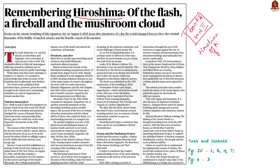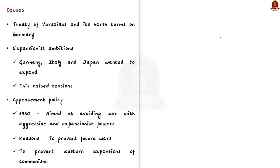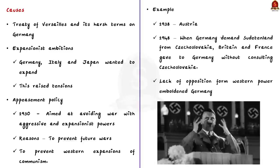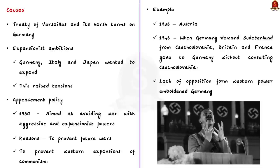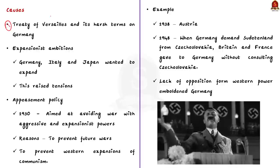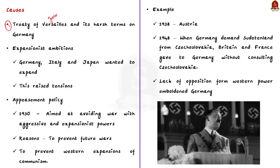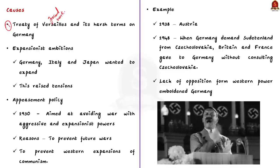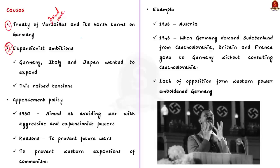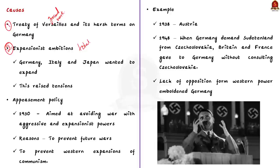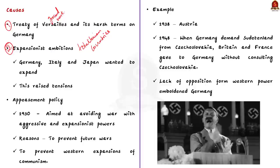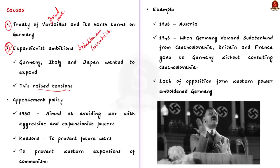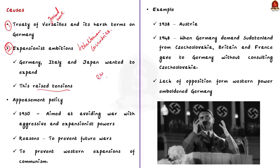Firstly, let us see the causes of World War II. After World War I, the Treaty of Versailles imposed harsh terms on Germany, creating resentment and economic hardship. This laid the groundwork for future conflicts. The next important cause is the expansionist ambitions of totalitarian countries like Germany, Italy and Japan. Nazi Germany under Adolf Hitler and Imperial Japan took aggressive measures to expand their territories, leading to territorial disputes and tensions.